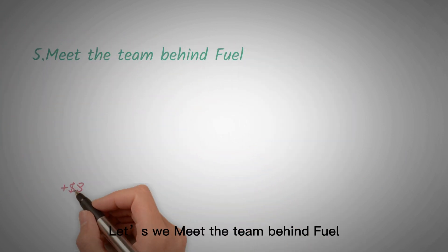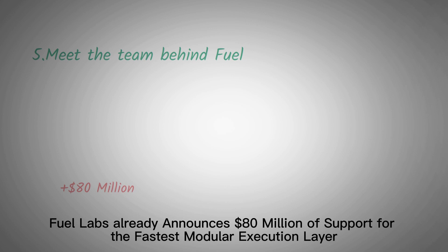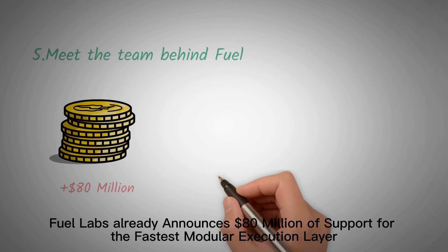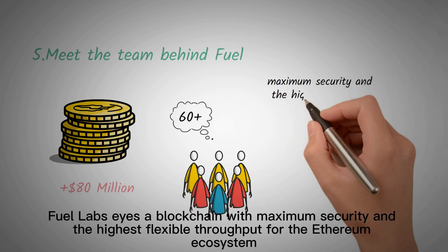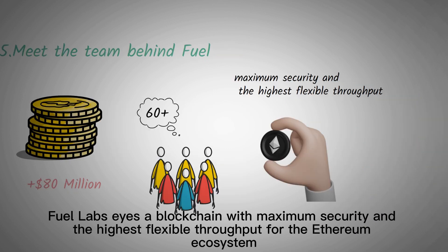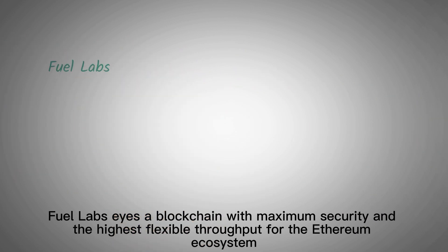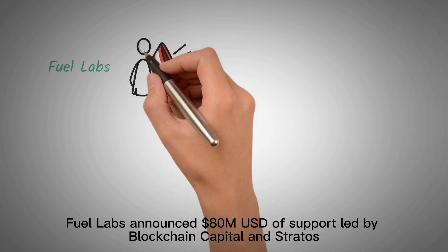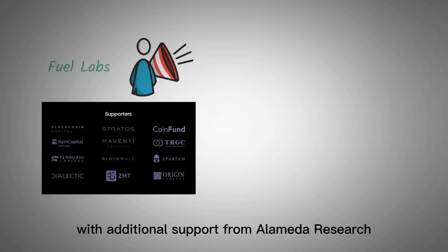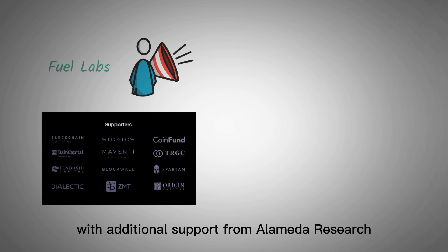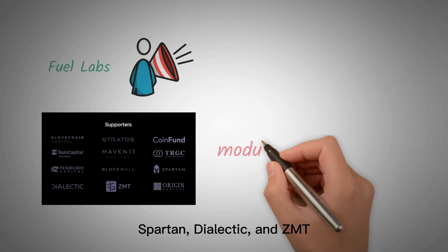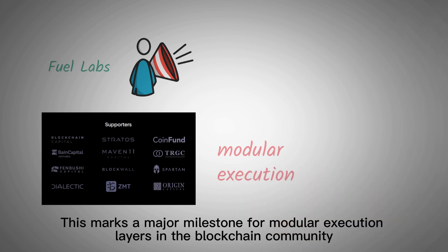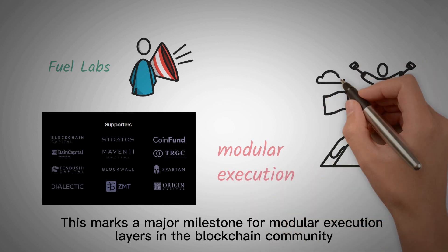Finally, let's meet the team behind Fuel. Fuel Labs has announced $80 million of support for the fastest modular execution layer with over 60 engineers. Fuel Labs announced $80 million US dollars of support led by Blockchain Capital and Stratos, with additional support from Alameda Research, CoinFund, Bain Capital Crypto, TRGC, Maven 11 Capital, Blockwall, Spartan, Dialectic, and ZMT. This marks a major milestone for modular execution layers in the blockchain community.